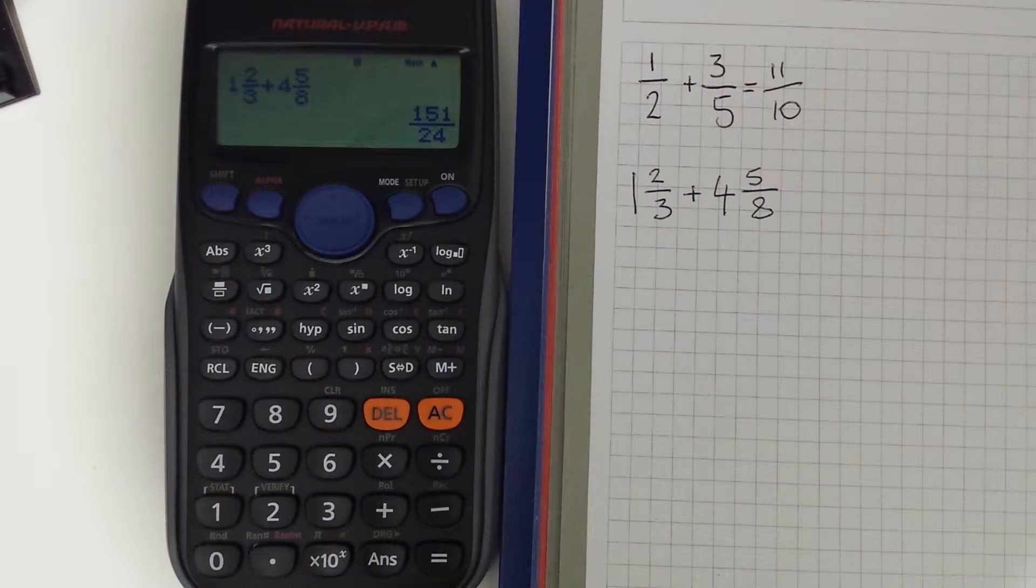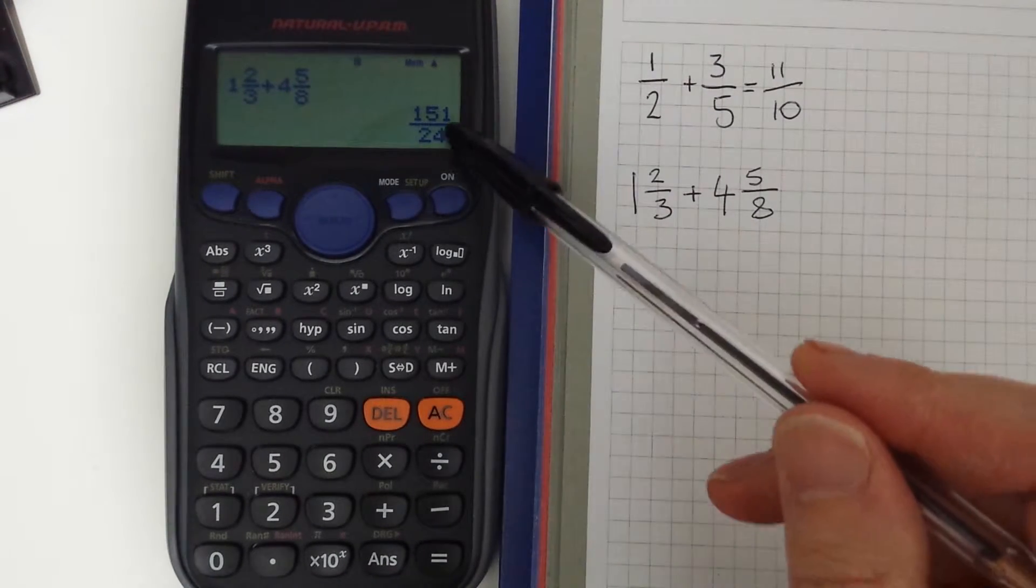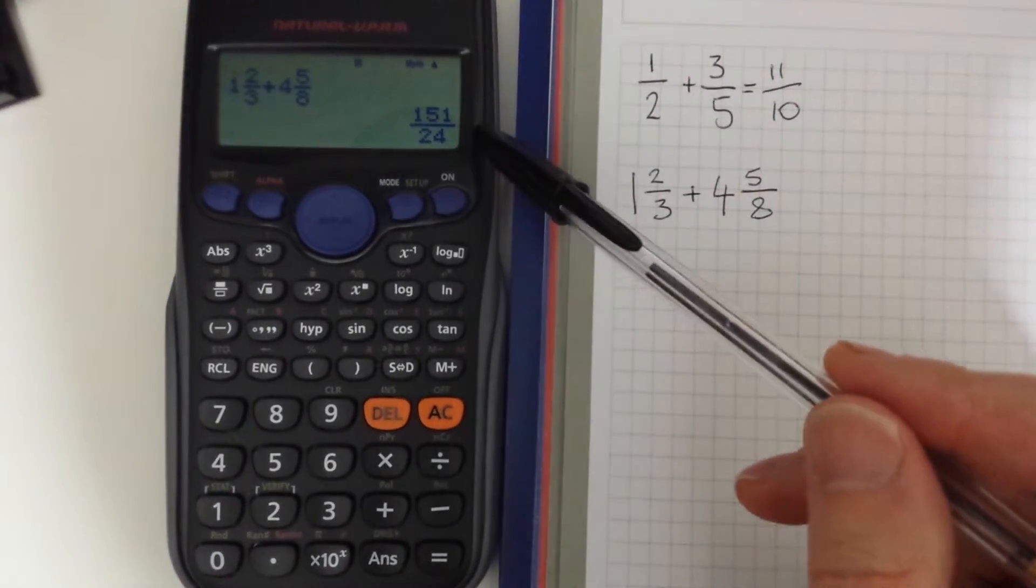So this time we've got a common denominator of 24, 3 eighths of 24, but this time the calculator is defaulted to giving the answer as an improper fraction.